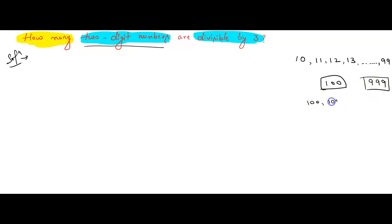So 100, 101, 102 and 999. If they ask you three-digit numbers, then you should write this. If they ask two-digit numbers, then you are supposed to write this. Understood?